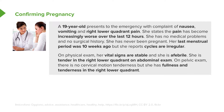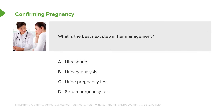She's never been pregnant. Her last menstrual period was 10 weeks ago, but she reports cycles are irregular. On physical exam, her vital signs are stable and she is afebrile. She is tender in the right lower quadrant on abdominal exam. On pelvic exam, there is no cervical motion tenderness, but she has fullness and tenderness in the right lower quadrant.